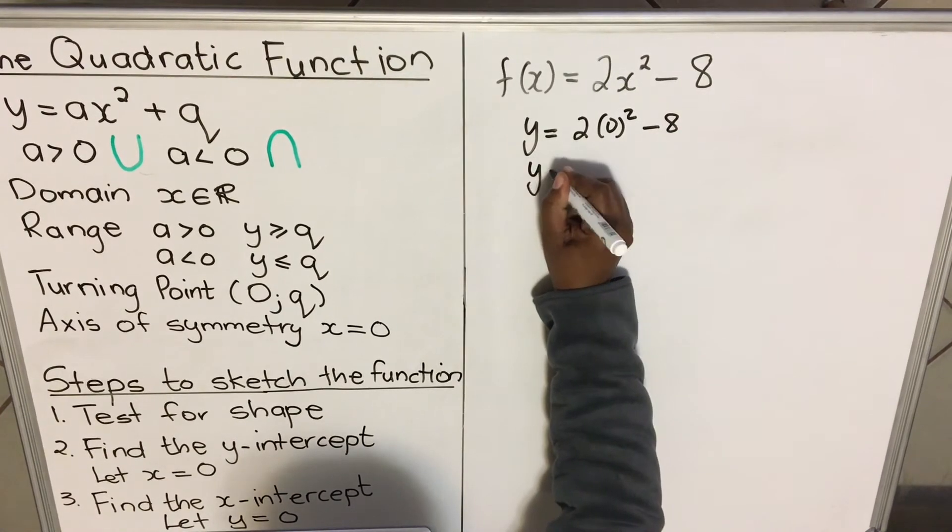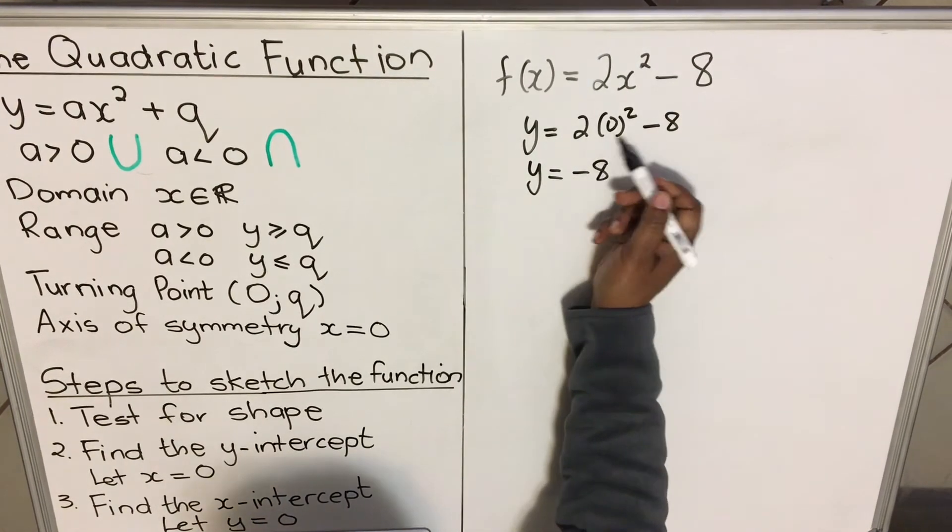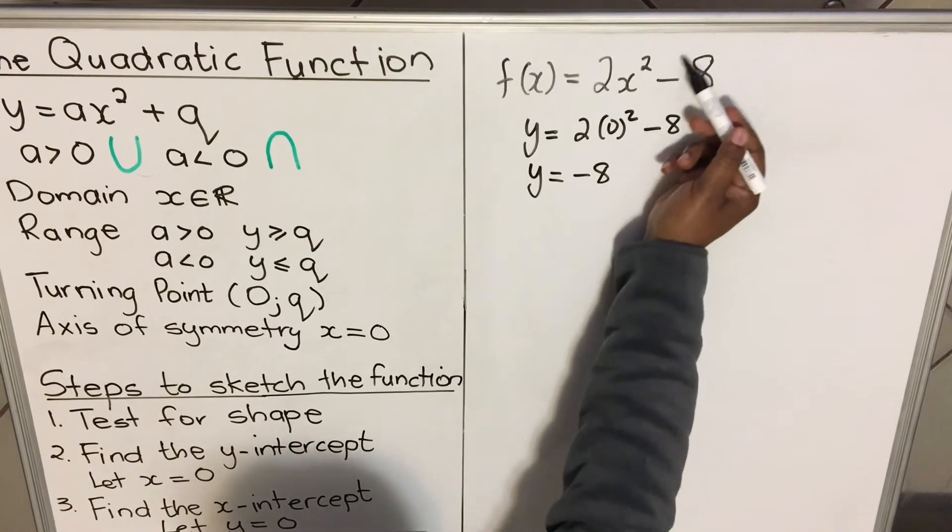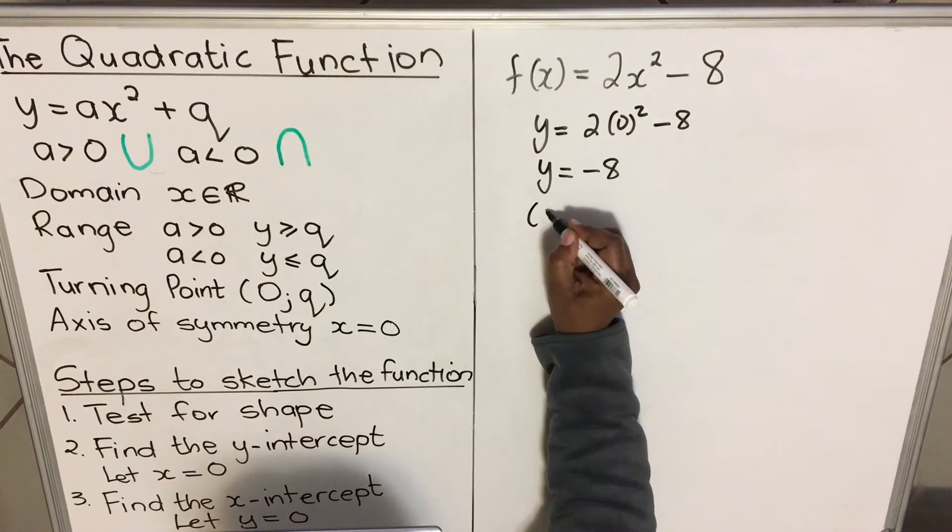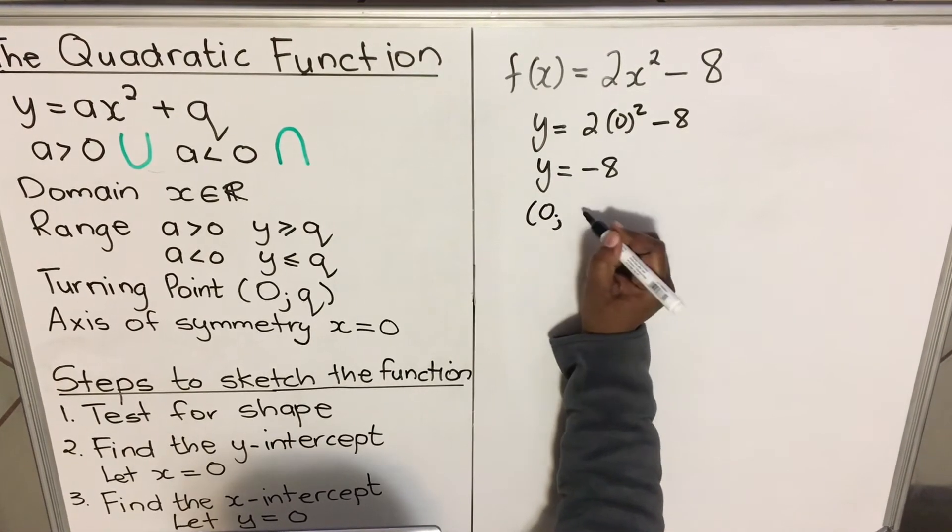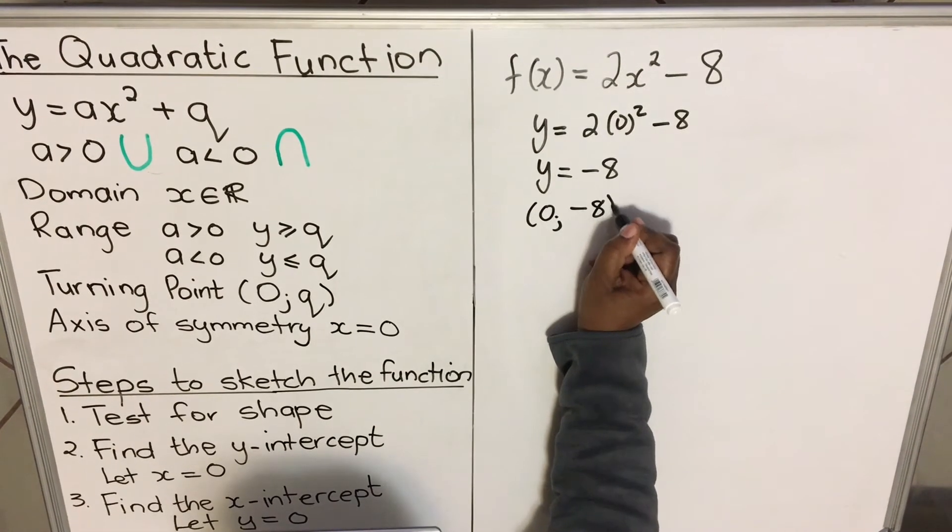So here we'll have y equals 2(0) squared minus 8, so it's actually y equals minus 8. You don't have to calculate; your q, that number, will always be your y-intercept. Then you write it as a coordinate: when x is zero, y is minus 8.